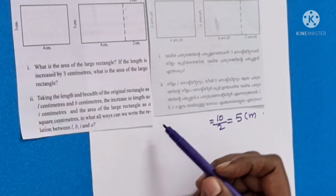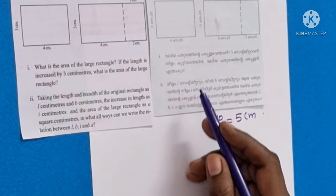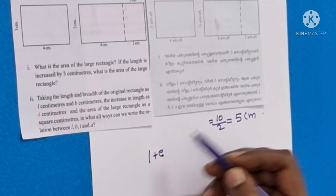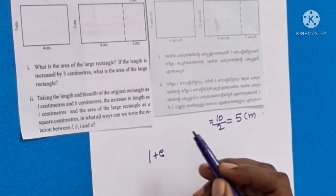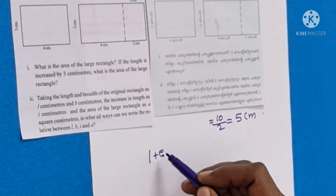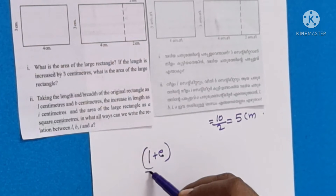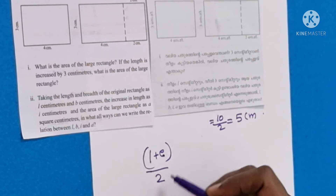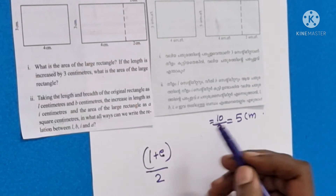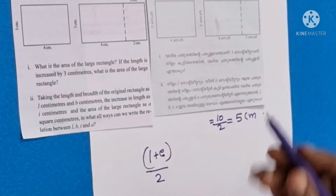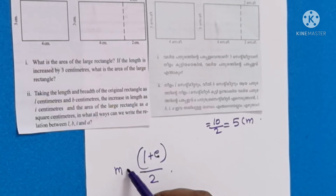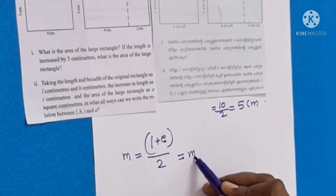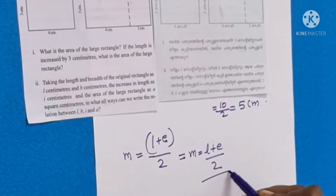The total length is L plus E. M is the midpoint, so M equals (L plus E) divided by 2. Therefore the relation is M equals (L plus E) by 2. There are no more arguments on this.